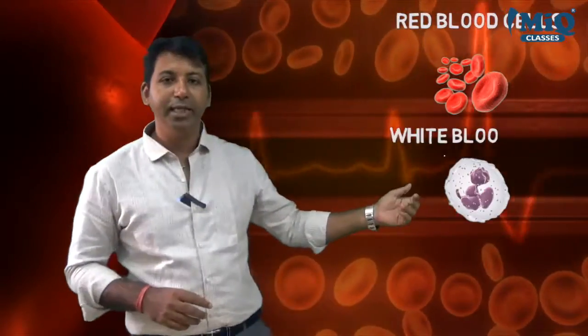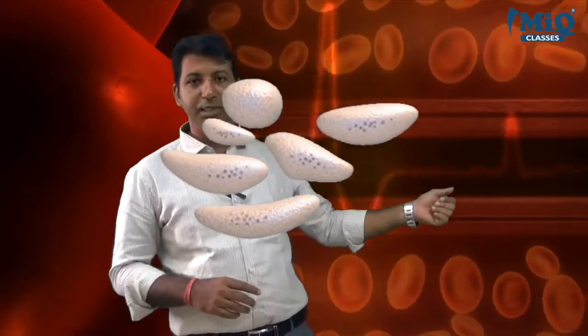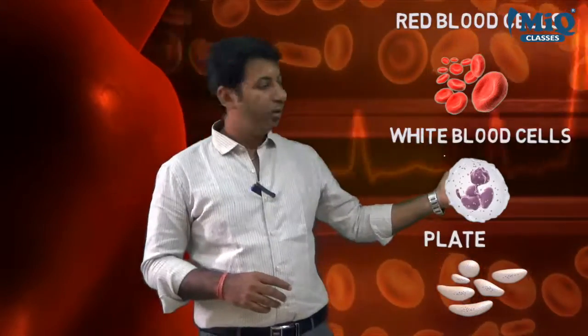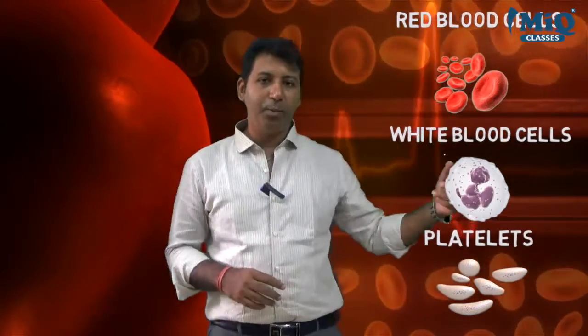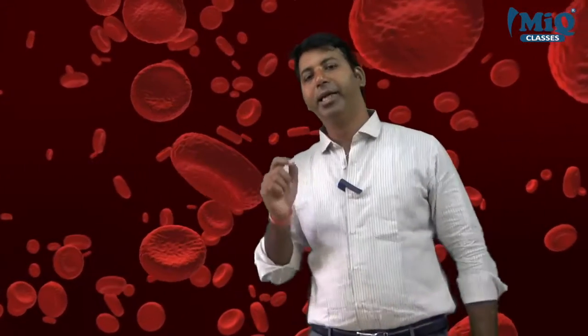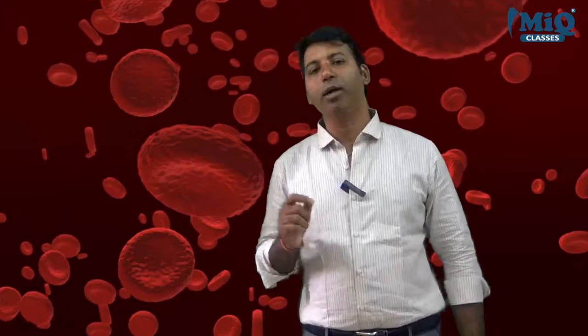There are three different types of cells: one is RBC, another is WBC, and the third is platelets. Let me discuss only about the RBC cells. RBC cells are very minute cells and they contain the red color pigment called hemoglobin.